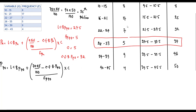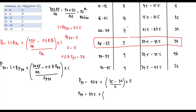Substituting all values into the formula: P_78 = 27.5 + [ (35 − 32) / 5 ] × 5. Simplifying: 35 − 32 = 3, divided by 5 times 5 — the fives cancel. So P_78 = 27.5 + 3 = 30.5. The 78th percentile is 30.5.